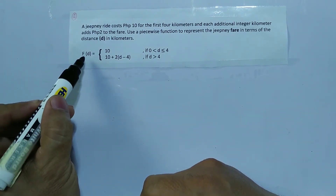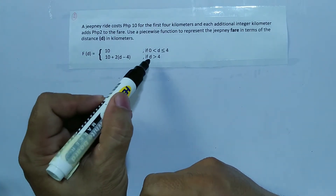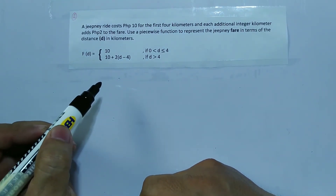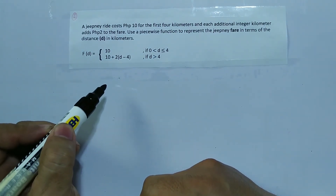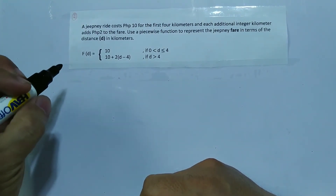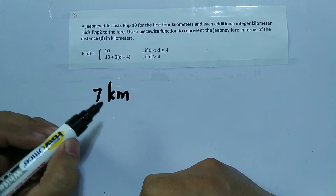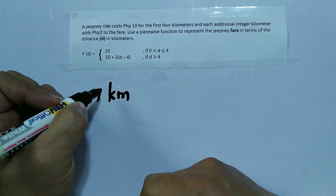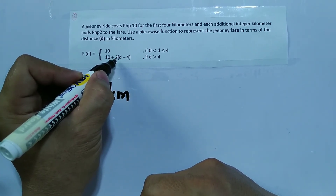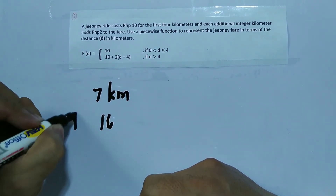The second sub-function is f(d) = 10 plus 2 times the quantity (d minus 4), if d is greater than 4, meaning for every succeeding kilometer after the 4th kilometer you will pay an additional 2 pesos. For example, if you travel 7 kilometers: 7 minus 4 is 3, then 3 times 2 is 6, plus 10, so the total fare is 16 pesos.